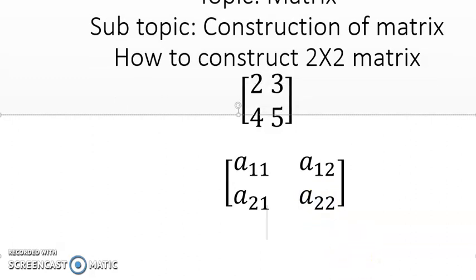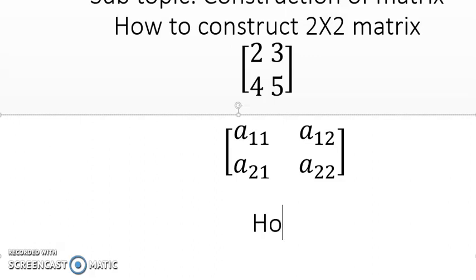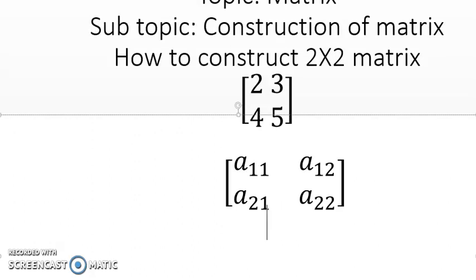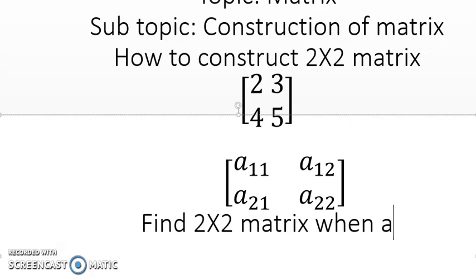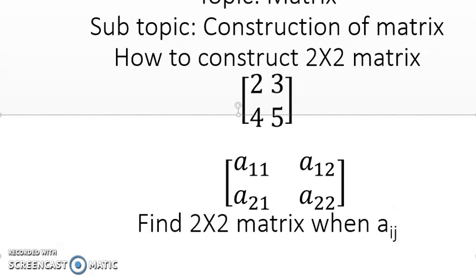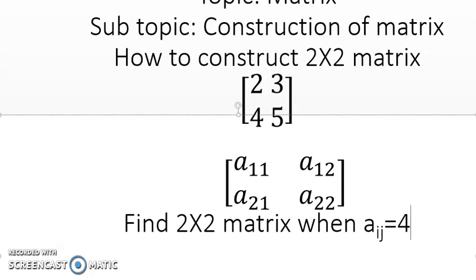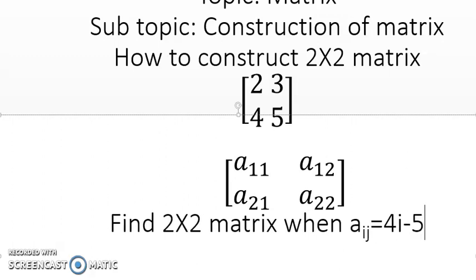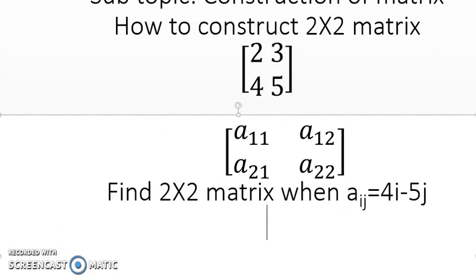So now let me give you one example: how to find 2 by 2 matrix when a_ij equals to 4i minus 5j.